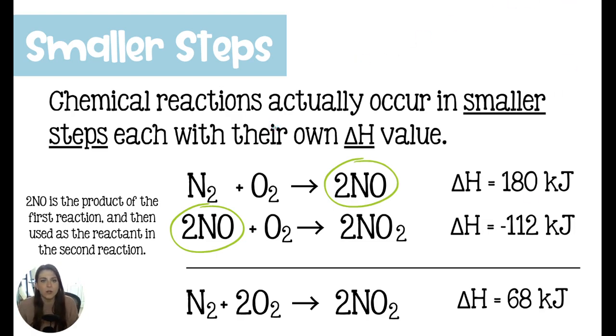And each step of a chemical reaction has its own ΔH value. So here we have an example of nitrogen and oxygen coming together and making nitrogen monoxide. And then those nitrogen monoxides go and react with more oxygen to form nitrogen dioxide.